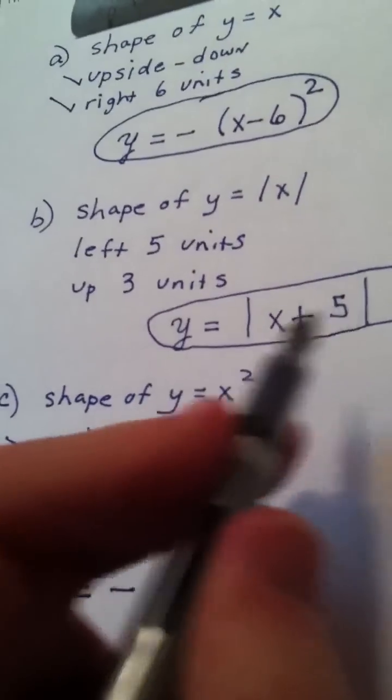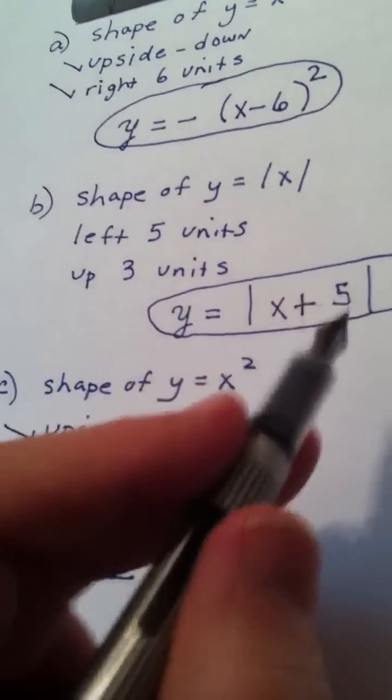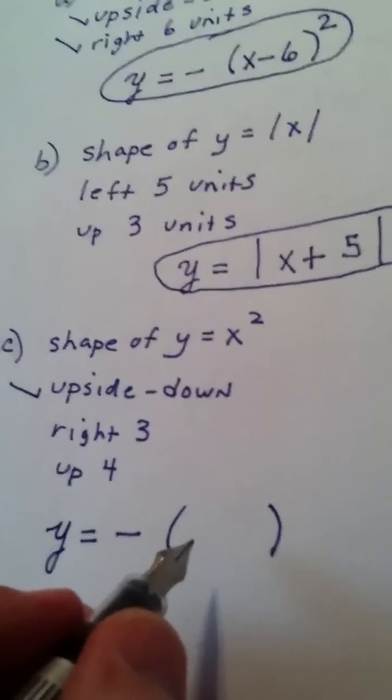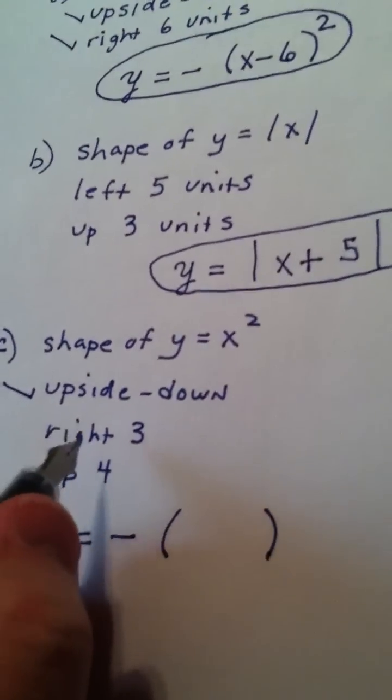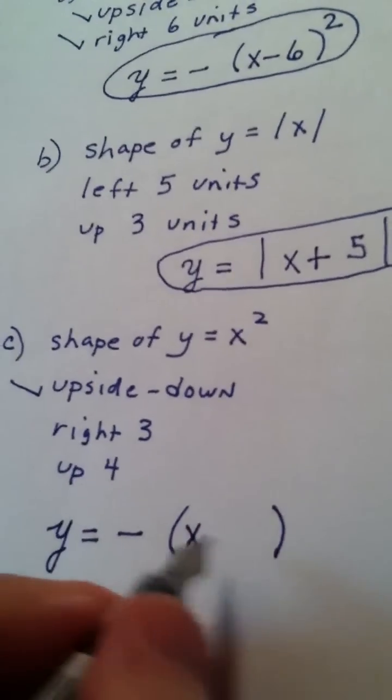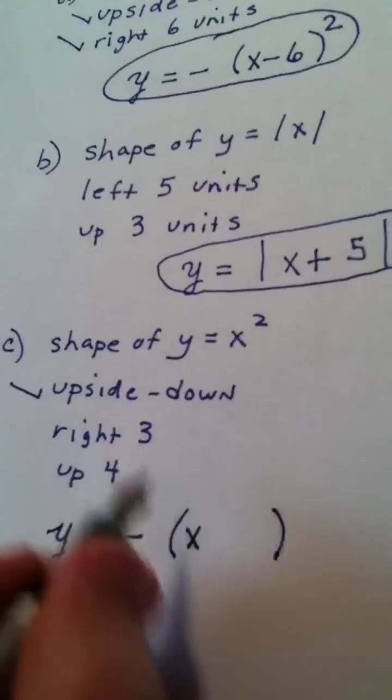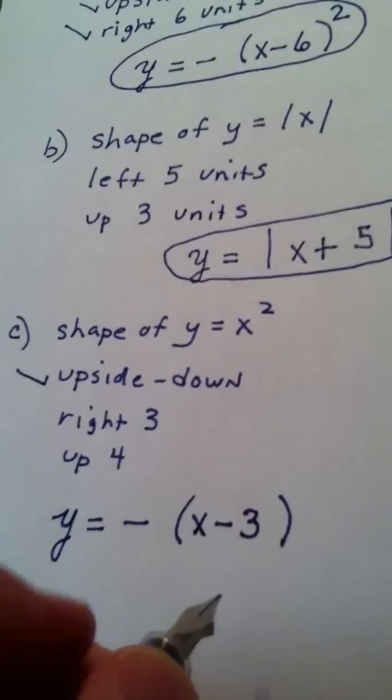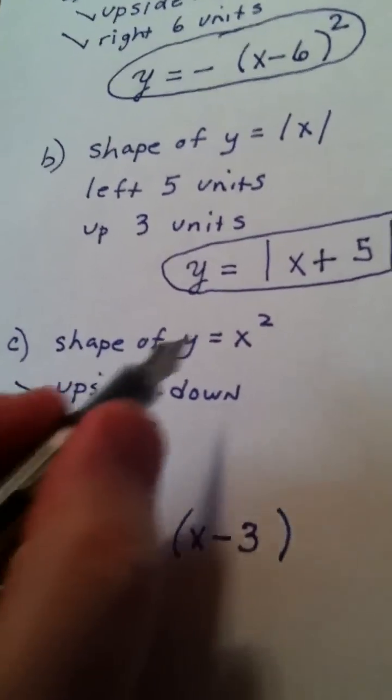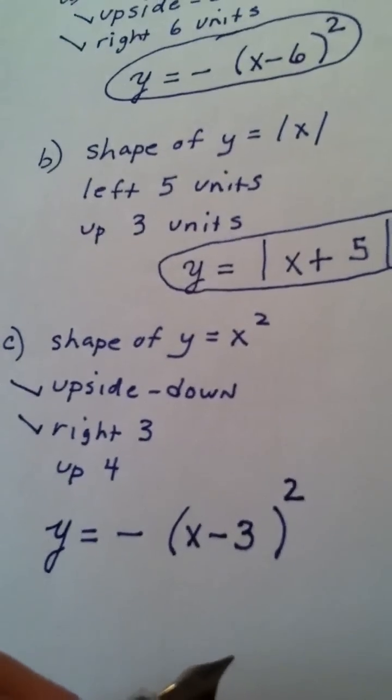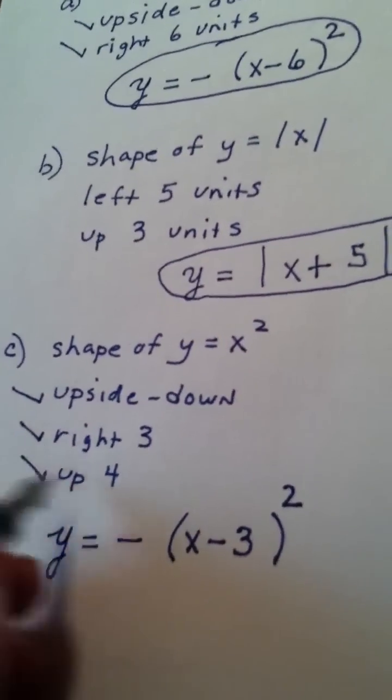And if I'm going right three, remember the x is always backwards. So instead of plus three, we do minus three. I put the squared on the outside of the parens to get my parabola in here.